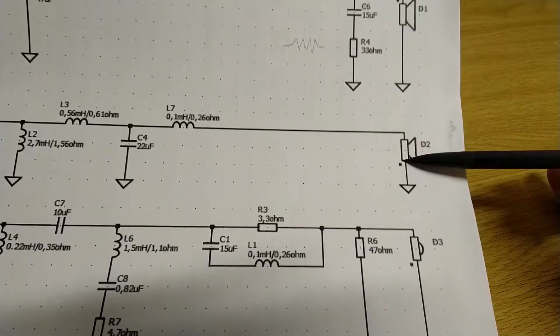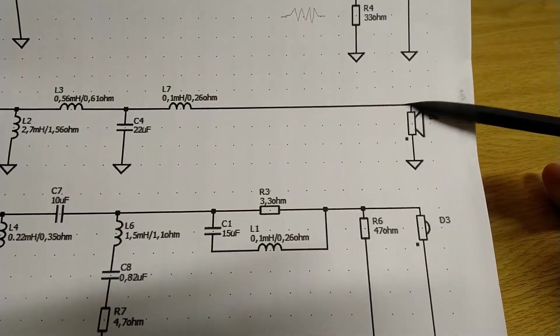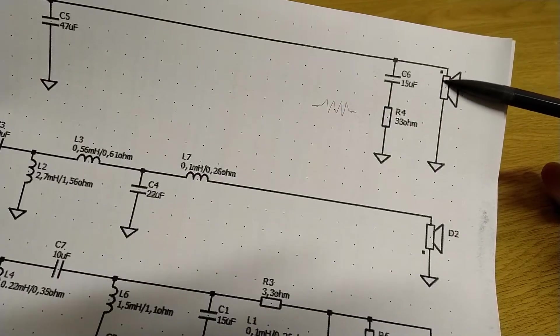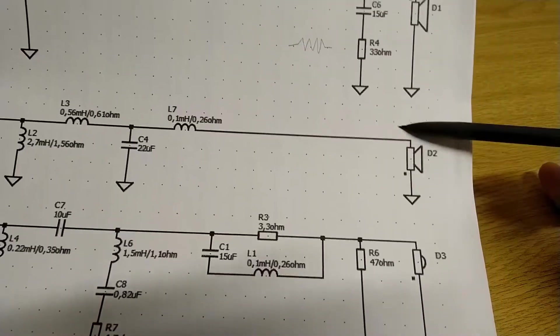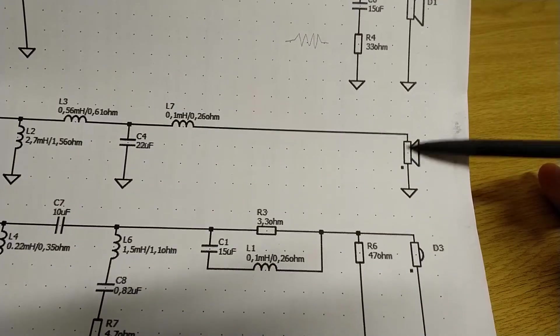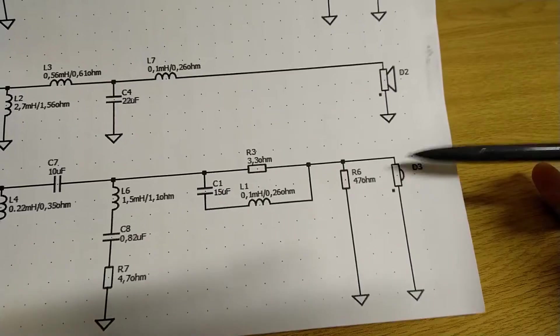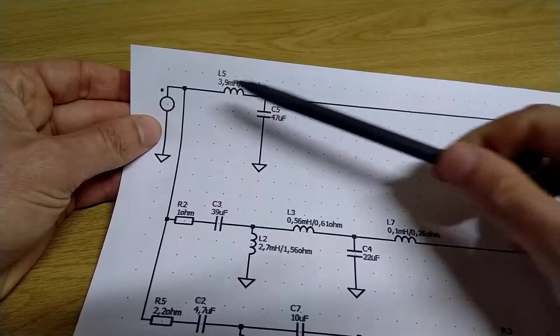Two of these are actually connected the other way around to what you'd expect, so positive going to not the square but the other side, and same with this one. The tweeter and the mid, these are the inductors.